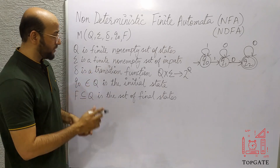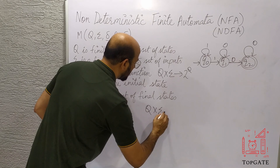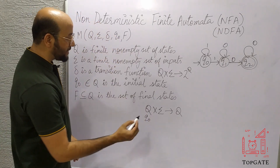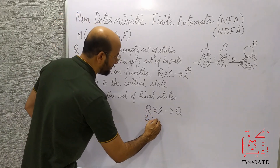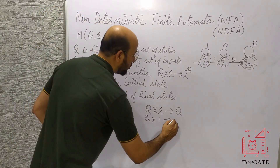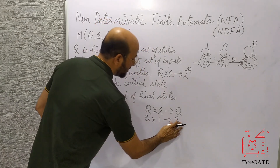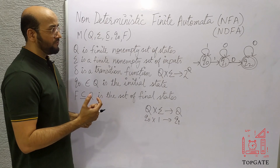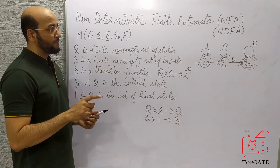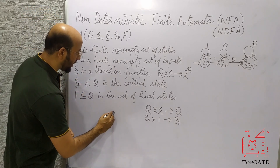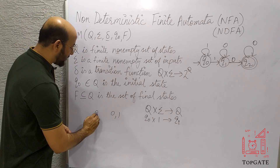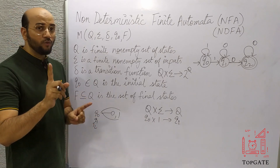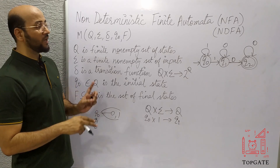For DFA, delta is defined as Q cross sigma gives Q. That means whenever we are on any state Q — say Q0 — and any input alphabet is applied, like 1, we go to only a single next state. There were two conditions in DFA: first, for every input alphabet there must be a path mandatory; second, for every input alphabet there should be only a single path. So if 0 and 1 are the input alphabets, for every state Q0, Q1, Q2 there must be exactly one path for 0 and one path for 1.